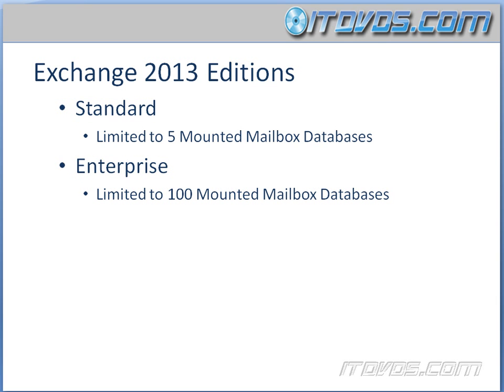Exchange 2013 License and Editions is pretty simple. Basically there's Standard and Enterprise. Standard is limited to five mounted mailbox databases — you can actually have more than five but you can only mount five at any one time. With Enterprise you can mount 100 mailbox databases. That's really the only difference.